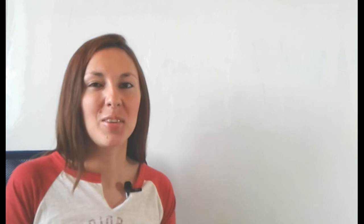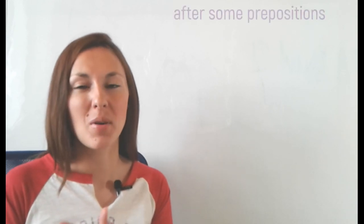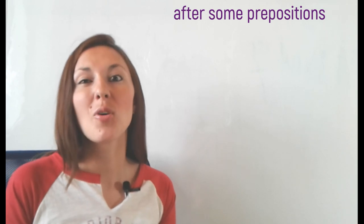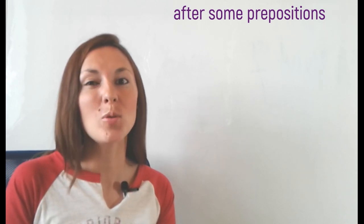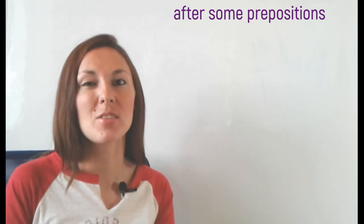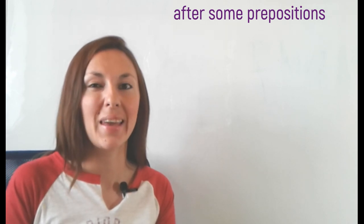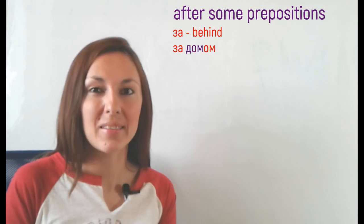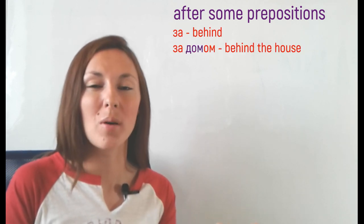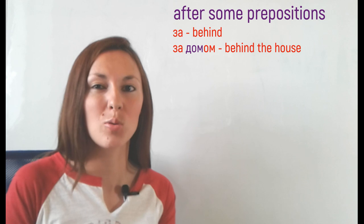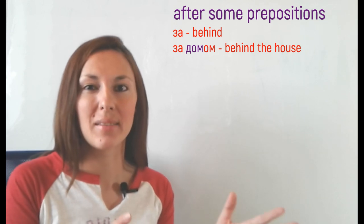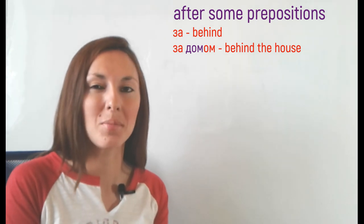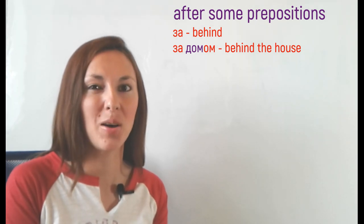And the last fifth usage is after some prepositions. С-preposition is the most common used preposition, but also there are five more prepositions after which we use instrumental case. They are ЗА, behind. For example, ЗА ДОМОМ, behind the house. ДОМ is a house, and we add ОМ, we get ДОМОМ. ЗА ДОМОМ, behind the house.